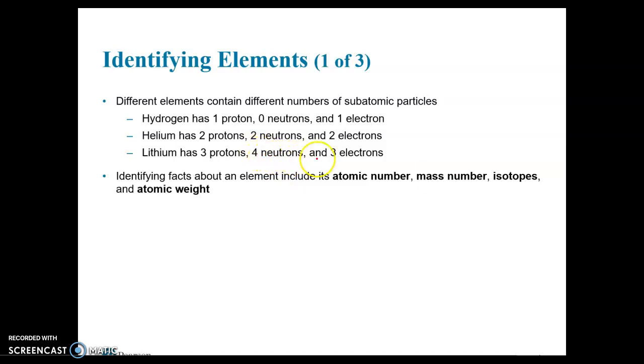Hydrogen is an element that has one proton, zero neutrons in its most common form, and one electron. Notice the protons and the electrons have to be equal, but the neutrons do not. Sometimes the neutrons are equal to the protons and the electrons, like with helium. But that is only a coincidence. You don't always find neutrons equaling the protons and electrons. Lithium, which is in group one, along with sodium. Lithium has three protons and three electrons, and then it has four neutrons.